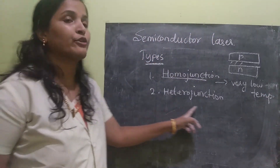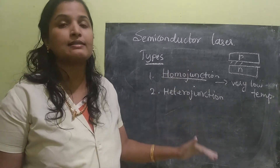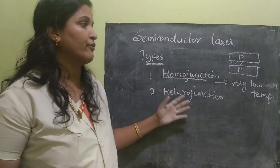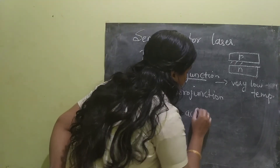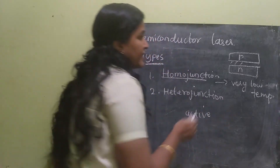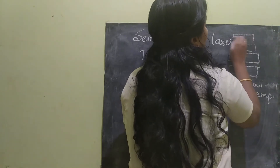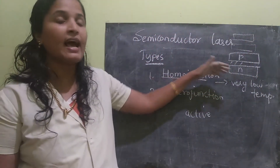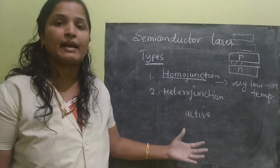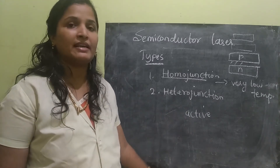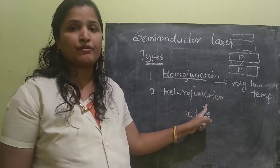Next is the hetero junction. The name itself says it — it will have many layers, alternative N, P, N, P layers. Because of that, more number of electrons can be accommodated. Here we have N, P, and again N layer, P layer — more number of layers are stacked and the middle layer is called the active layer. Because of this, the laser emission can be easily done using this hetero junction. And this is the most commonly used type of semiconductor laser.